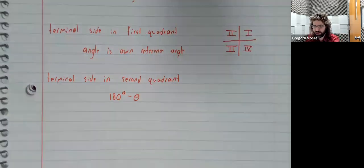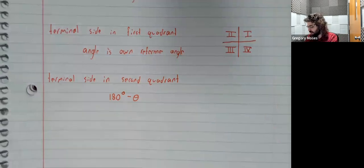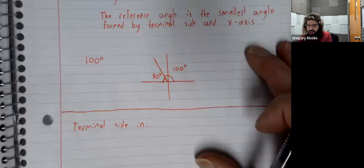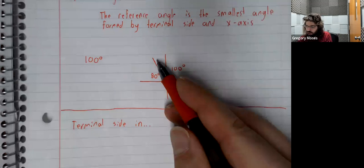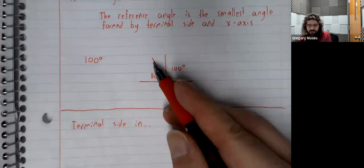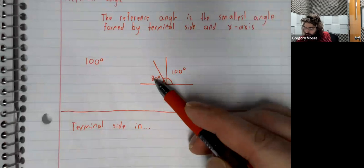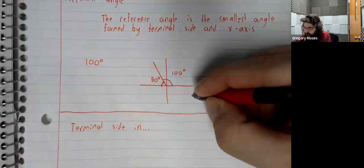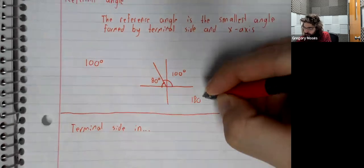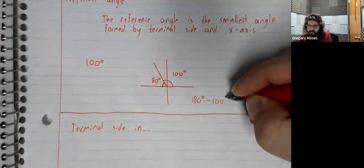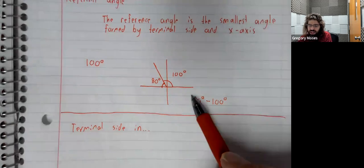So, briefly flipping back through our notes, this terminal side was in the second quadrant. I said the reference angle was 80 degrees. Where did 80 degrees come from? Well, it was 180 degrees minus the angle.